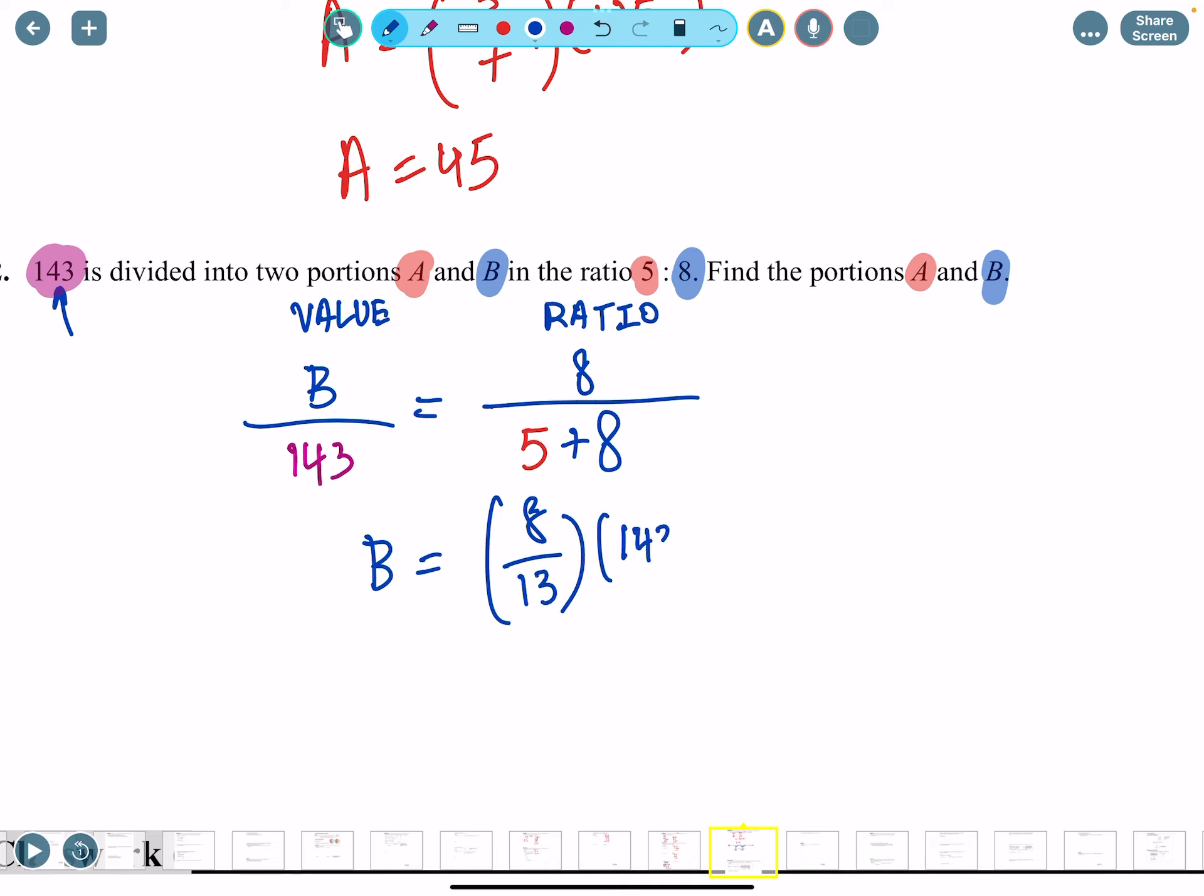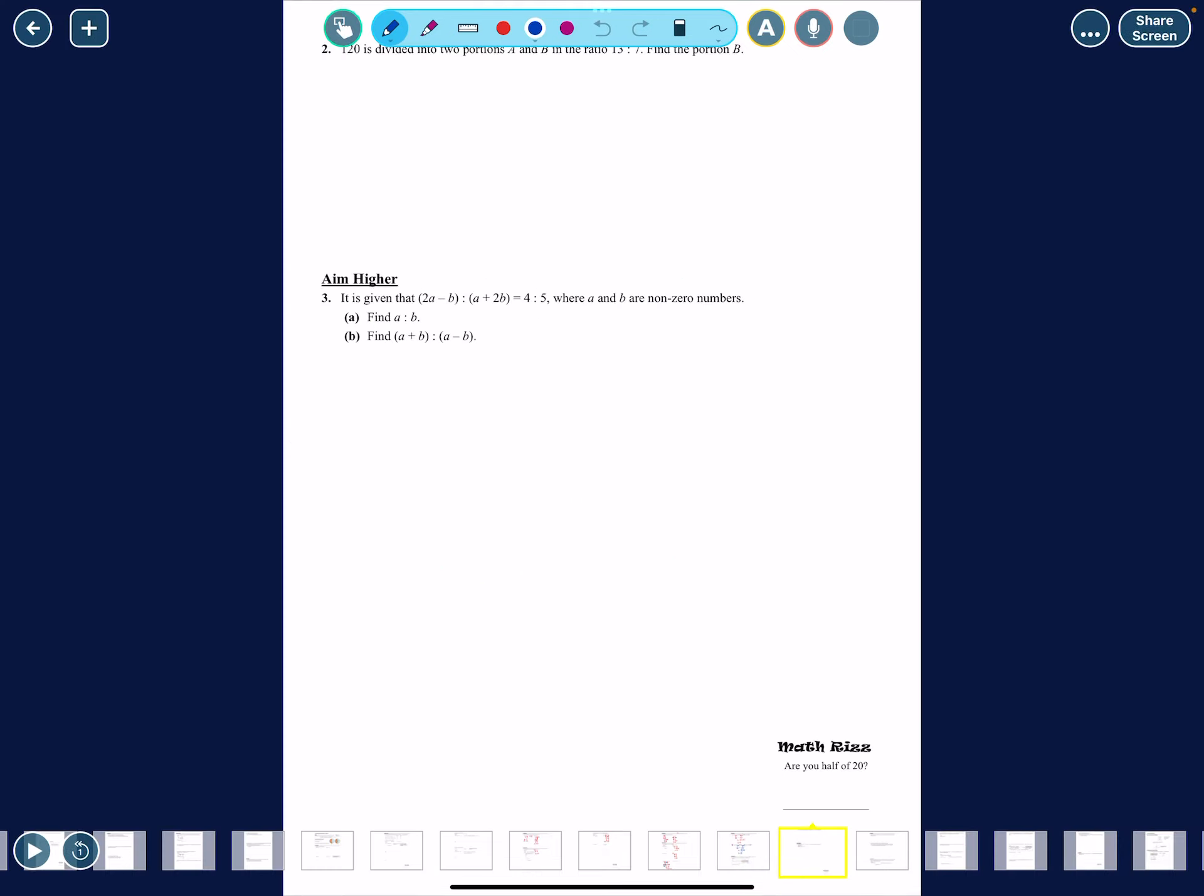If you move things around, we have B equals 8 over 13 times 143. You might be going like, Mr. Genesis, why don't we just start with this step? I just want you to realize how we got to this step. It's not always the total times a ratio. If I know the value of A, let's say A is 20, I can just put A there - 8 blue over red. So this ratio method has a lot of uses. Let's calculate: 8 divided by 13 times 143 is 88.